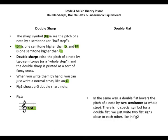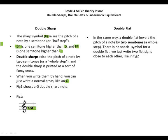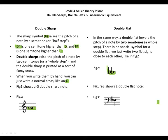Double flat. In the same way, a double flat lowers the pitch of a note by two semitones — a whole step. There is no special symbol for a double flat; we just write two flat signs close to each other, as shown in figure two. Figure three shows how we write a double flat next to a note.